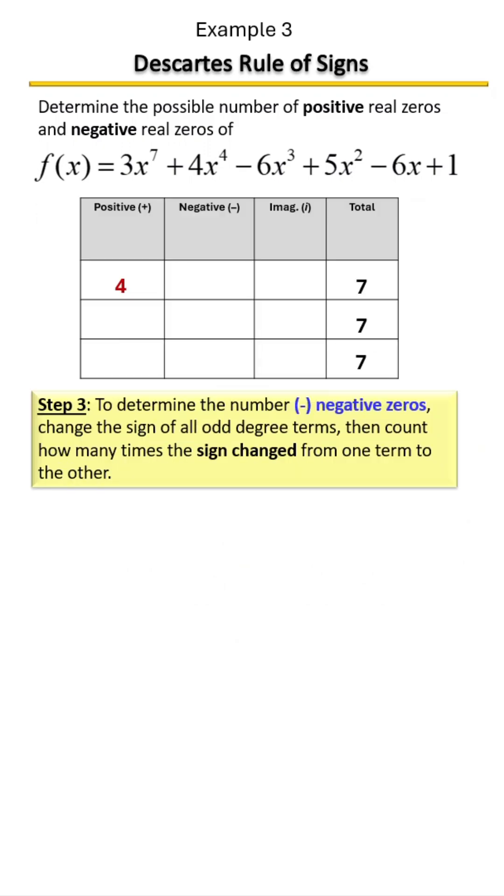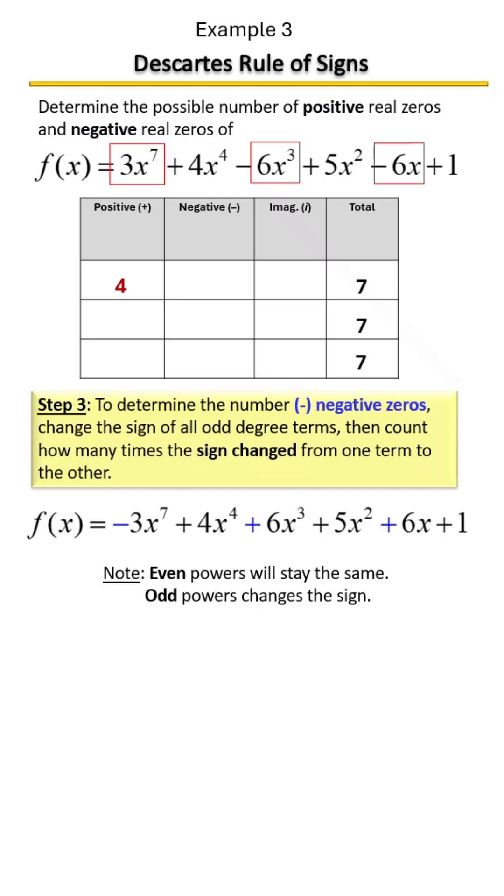And now we're going to determine the number of negative zeros. To do that, we need to identify our odd degree terms, and it looks like we have three of them. We're going to change their sign to their opposite. And now we're going to look at the polynomial to see how many times the sign changed from one term to the next.